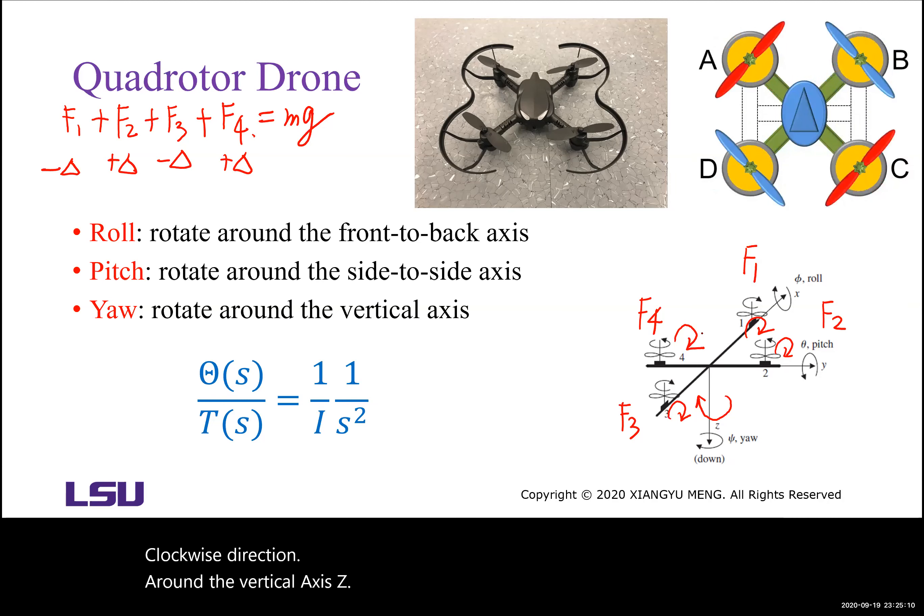Then we know the transfer function from the torque to the rotational angle phi will be a double integrator model, phi will be 1 over I times s squared, where I is moment of inertia.